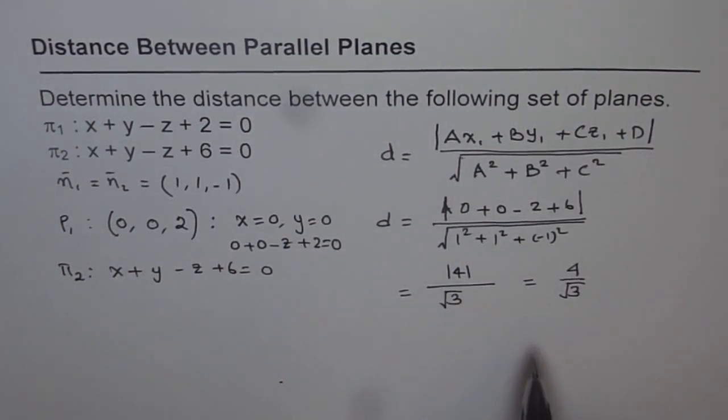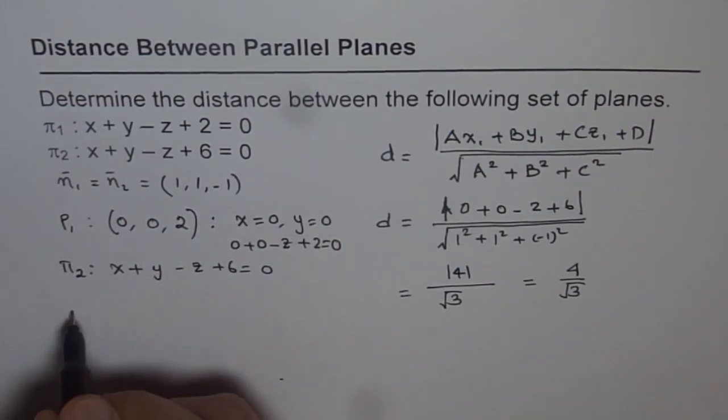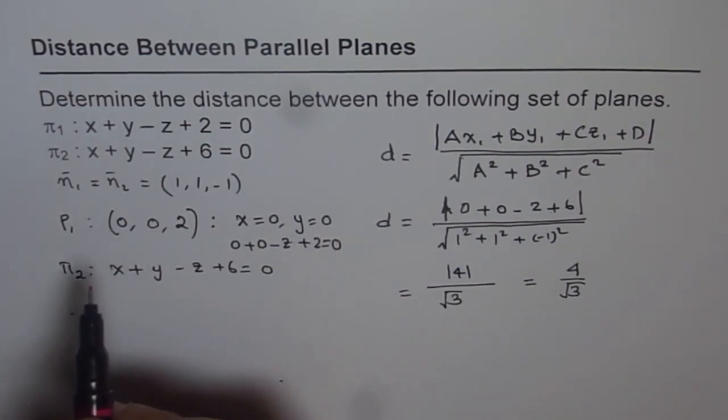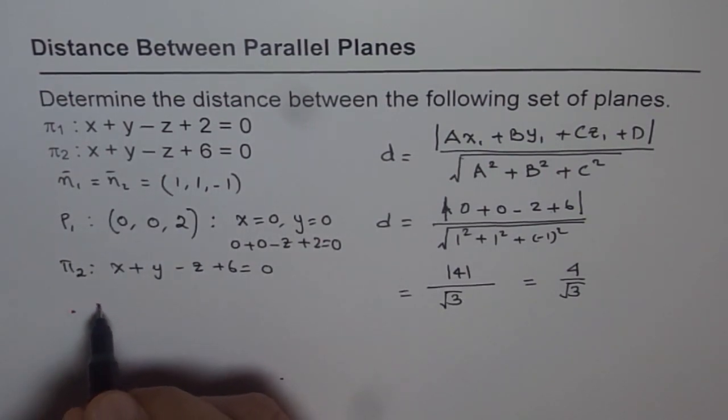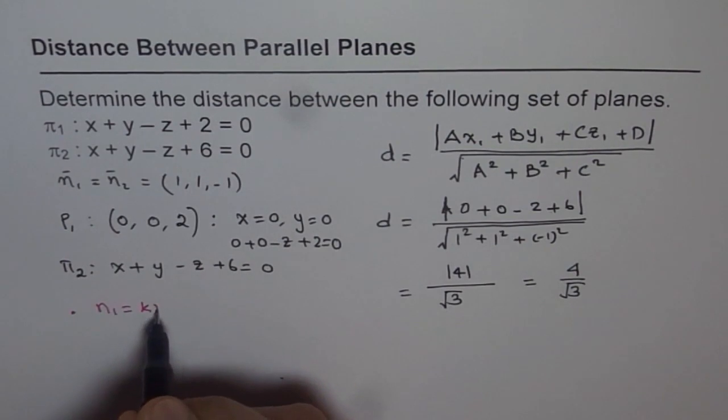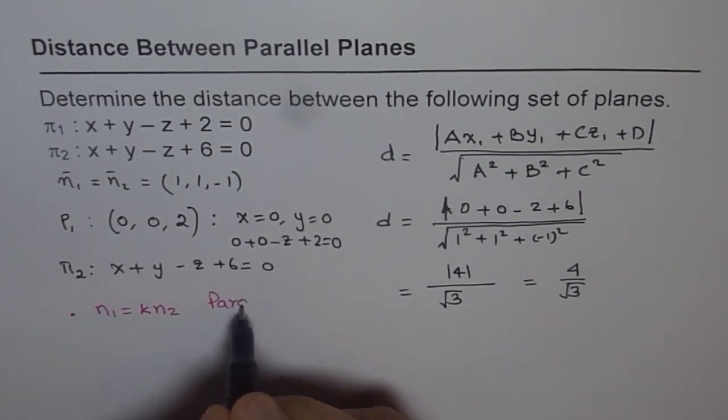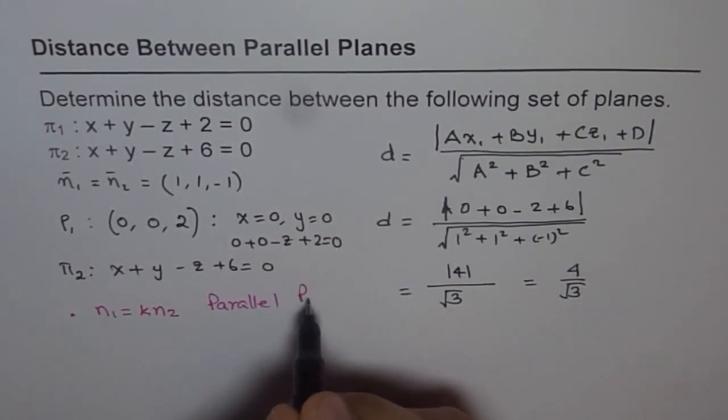That is how you find the distance between two planes which are parallel. What you have to do here, first and foremost, is check that normals are scalar multiple. We say n1 equals to k times n2. That means parallel planes.